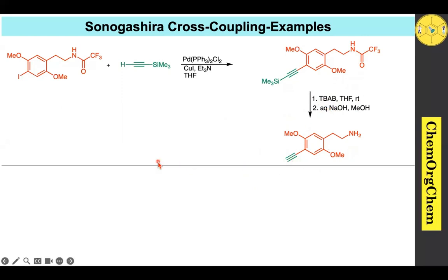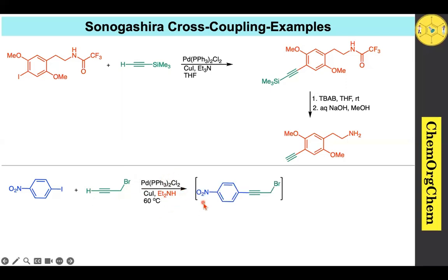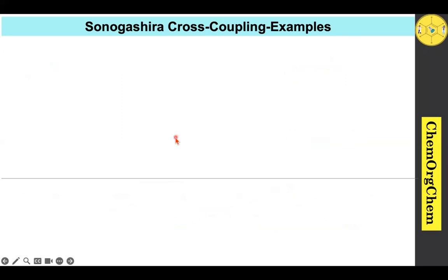Example 2: An aryl iodide reacts with propargyl bromide under Sonogashira conditions. Initially, the carbon-carbon coupling product is formed in situ. Diethylamine, acting as both solvent and base/nucleophile, readily displaces the bromide to produce the corresponding alkyne product.